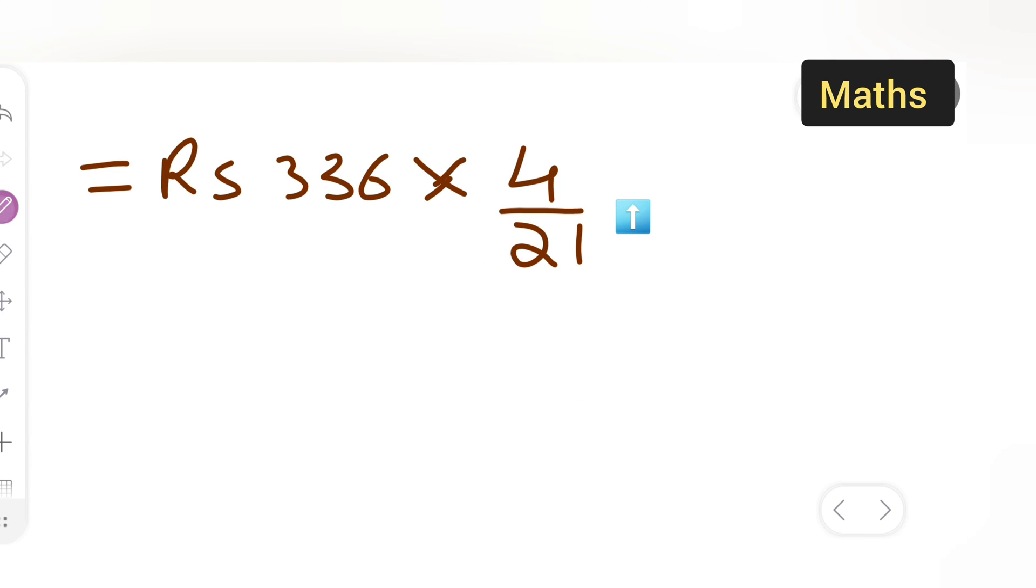Now cancel whatever is getting cancelled over here. So you will get your final answer. You can cancel this on the table, just divide this number and see, 21 divide by 336.